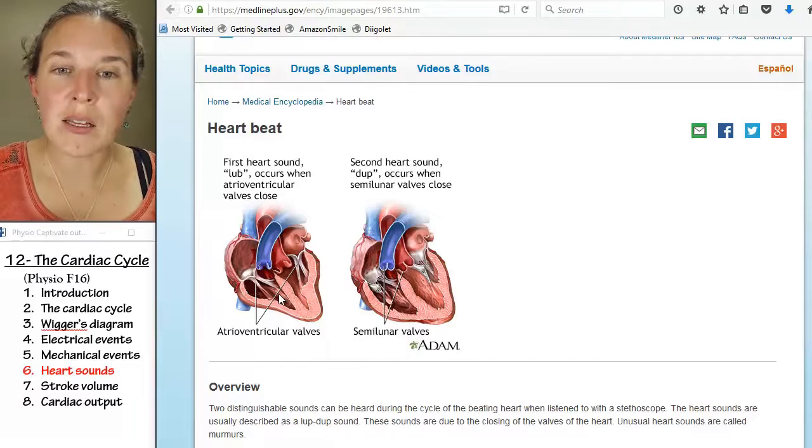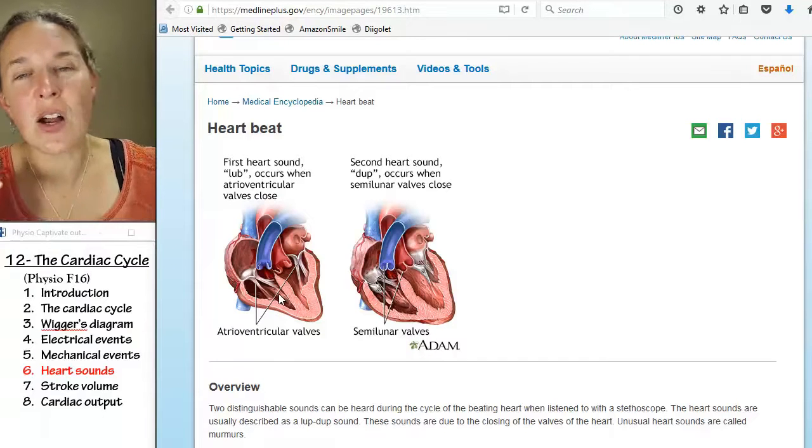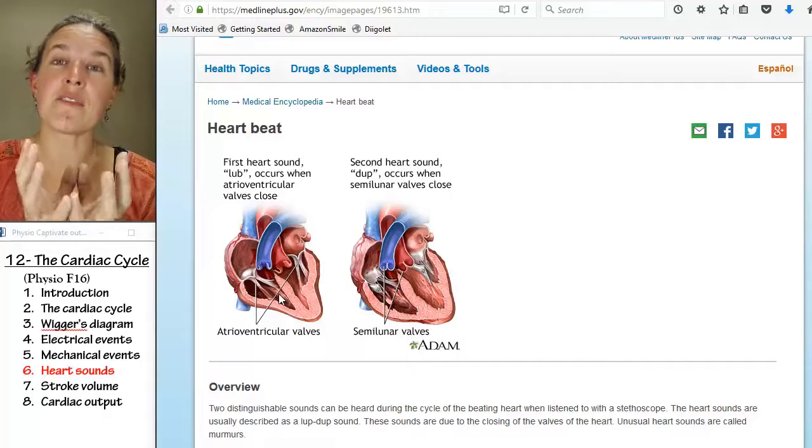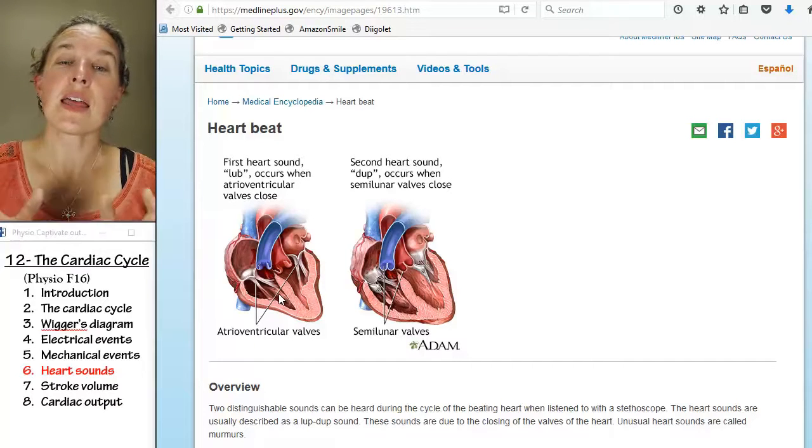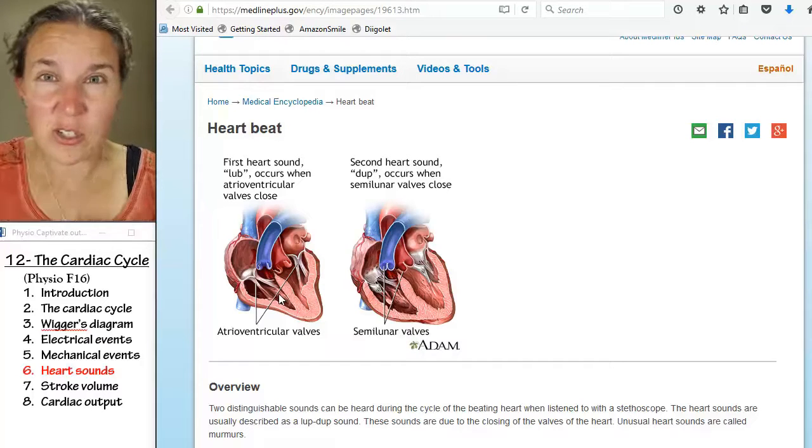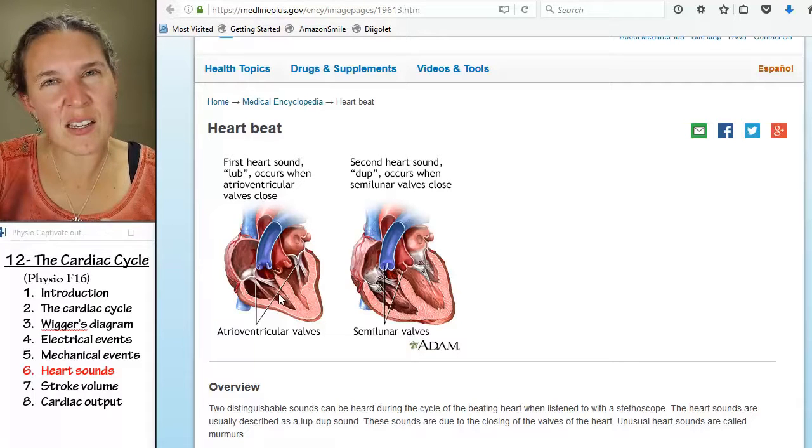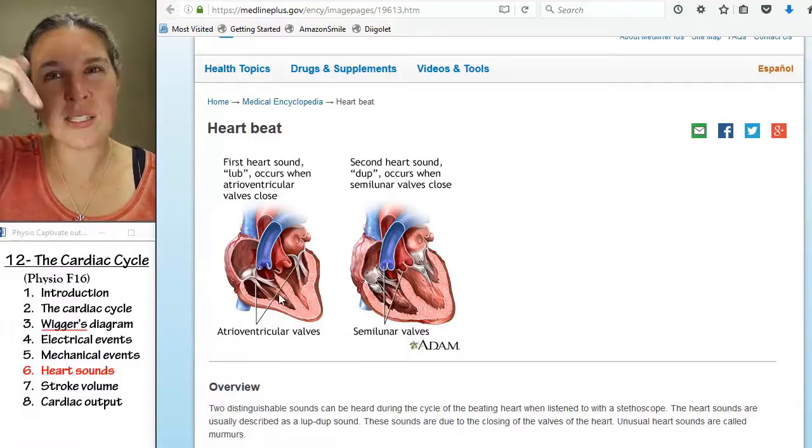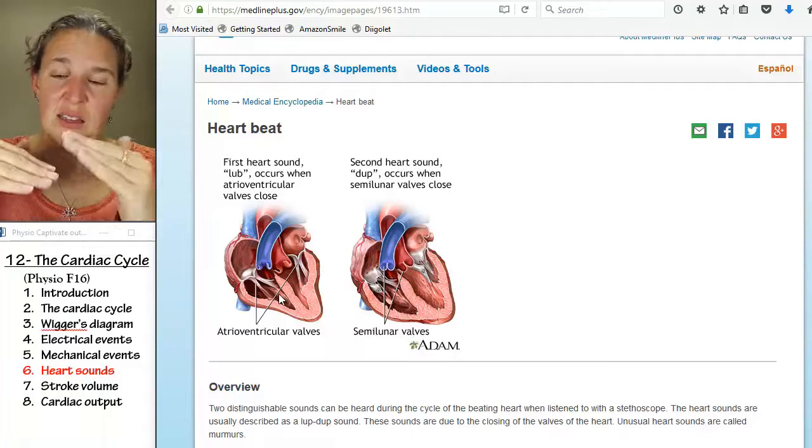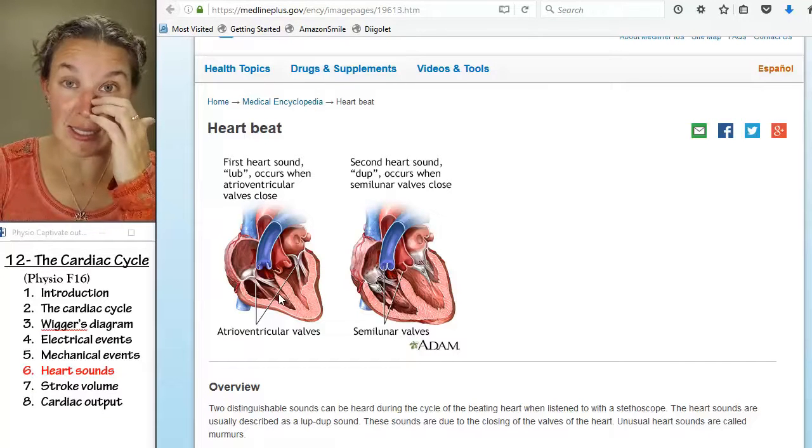The dub is associated with the semilunar valves closing. Those guys are going to close when ventricular systole happens. You push all the blood out in systole of the ventricles, squish it all out there, and now you relax the ventricles. The blood wants to come backwards. Those semilunar valves are going to say, sorry for your luck, they're going to close. It's going to create turbulence. That's what you're going to hear is that second sound, which is a dub.